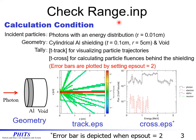In this section, we use range.inp. First, we should check the input file. The incident particle is a photon with an energy distribution, and the beam radius is 0.01 cm. The geometry consists of cylindrical aluminum shielding and a void. An aluminum target of thickness 0.1 cm and radius 5 cm is prepared. We use t-track tally for visualizing particle trajectories and t-cross tally for calculating particle fluences behind the shielding. Using the t-cross tally, error bars are plotted by setting eps_out. We can see the figures from track.eps and cross.eps output files.